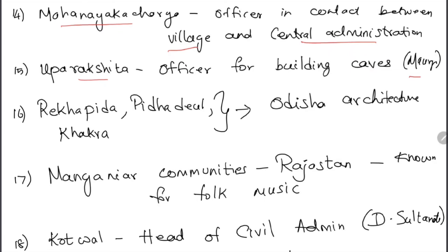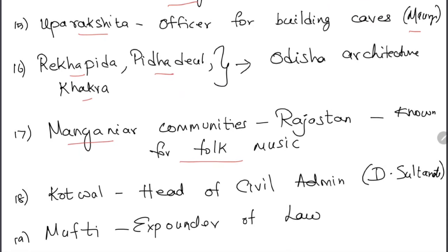Reka, Pitha, Pithadual, and Kakra are important features in Odisha architecture. Manganiyar communities in Rajasthan are known for their folk music. Kothwal was the head of civil administration during the Delhi Sultanate. Mukti were expounders of law during the Delhi Sultanate.